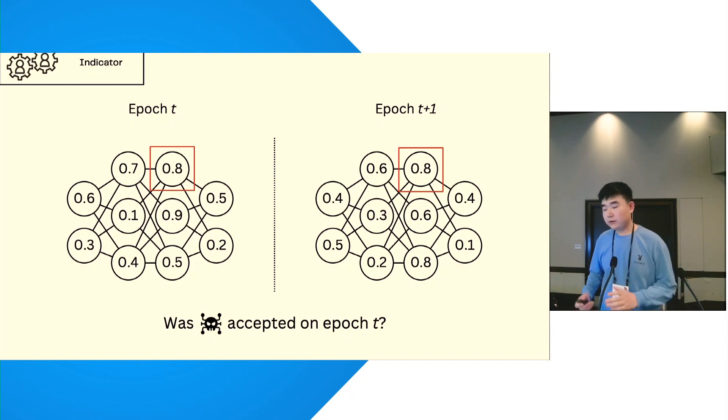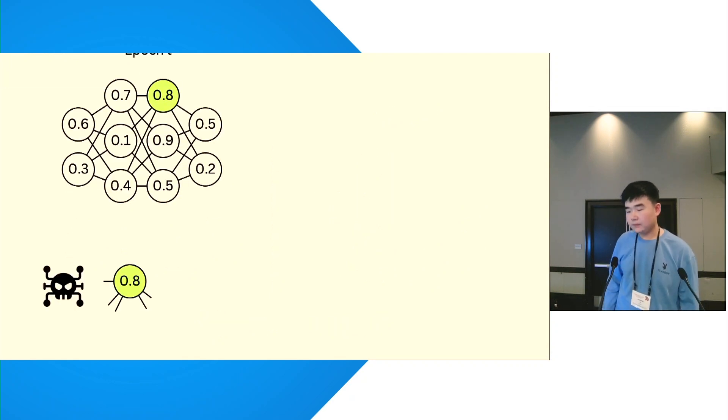If only the Backdoor Model will modify this redundant neuron, they can be assigned to indicate whether the corresponding Backdoor Model was accepted or not. So how it works: